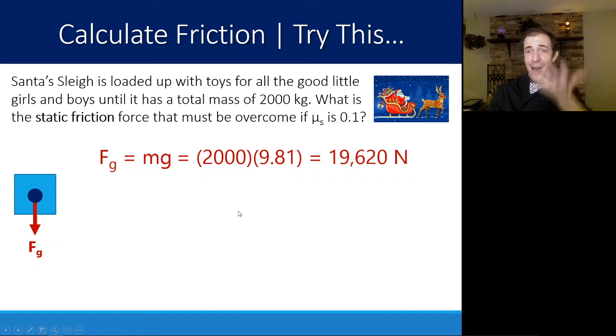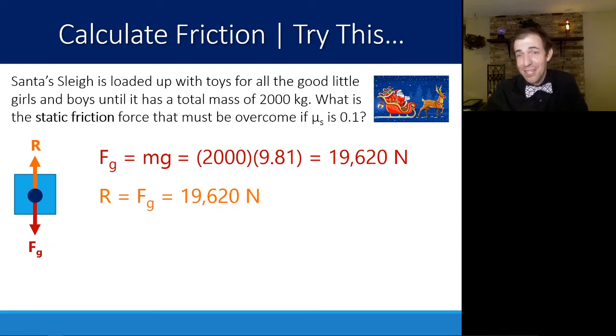We know that the ground must be pushing back up on it. Since this Santa's sleigh is going to just try to move to the side, we know that R has to be counteracting the force of gravity. So R is just equal to that, which is again 19,620.